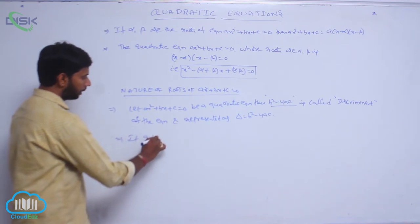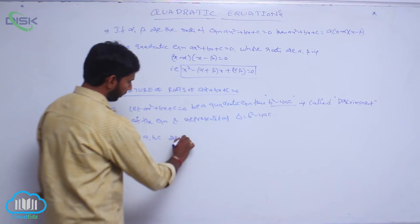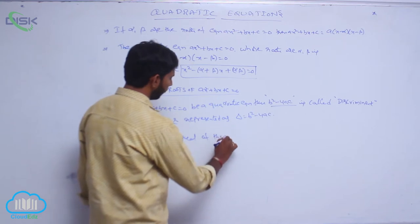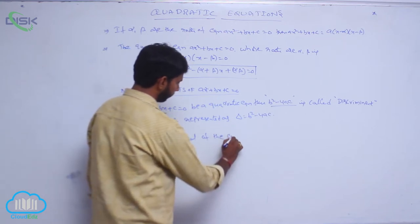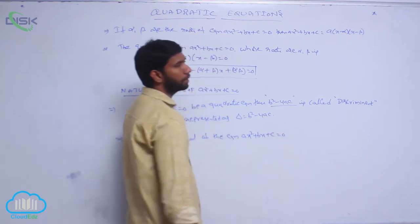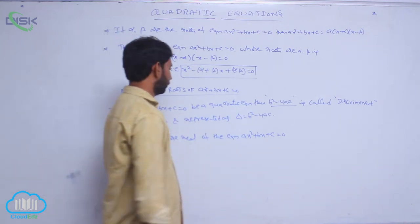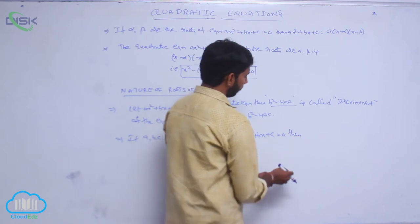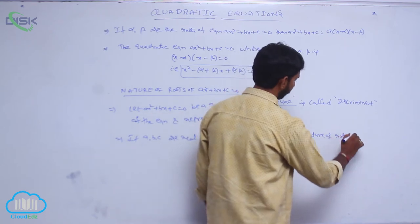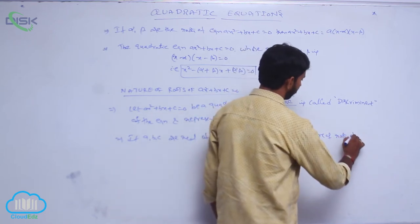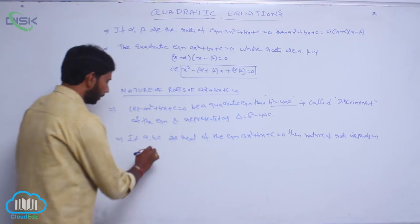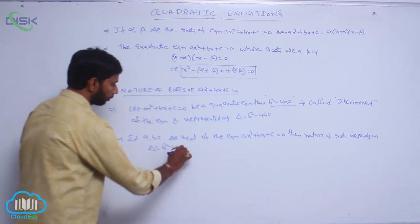If A, B, C are real coefficients of the equation Ax² + Bx + C = 0, then the nature of roots depends on the discriminant delta = B² − 4AC.